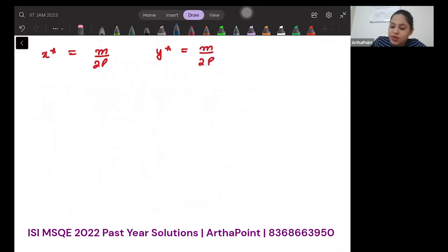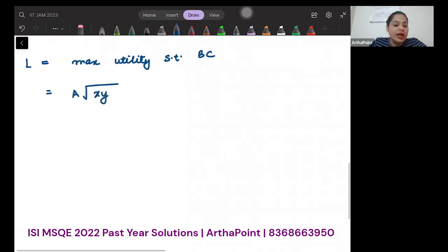So what will be your Lagrange? I want to maximize my utility function subject to a budget constraint. So my utility function is a√(xy), and my budget constraint is plus λ times (m - px·x - py·y). This is what is there.